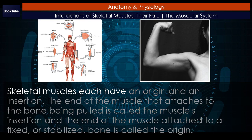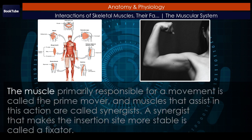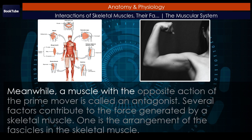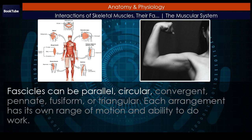Chapter Review: Skeletal muscles each have an origin and an insertion. The end of the muscle that attaches to the bone being pulled is called the muscle's insertion, and the end attached to a fixed or stabilized bone is called the origin. The muscle primarily responsible for a movement is called the prime mover, and muscles that assist in this action are called synergists. A synergist that makes the insertion site more stable is called a fixator, while a muscle with the opposite action of the prime mover is called an antagonist. Several factors contribute to the force generated by a skeletal muscle, including the arrangement of fascicles, which can be parallel, circular, convergent, pennate, fusiform, or triangular — each arrangement has its own range of motion and ability to do work.